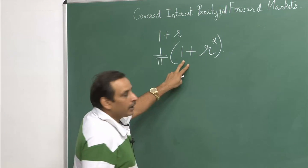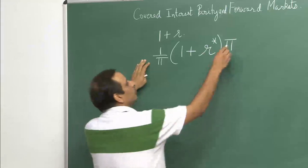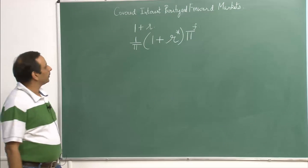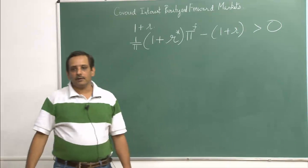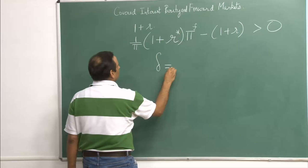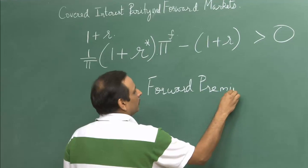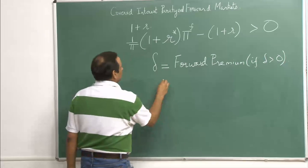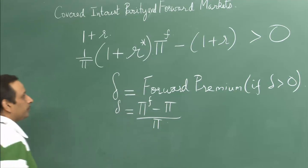Now, you want to bring it back. Instead of using the π^e that we used when discussing the open interest differential, we use the forward rate to convert the foreign currency into the local currency. If this is greater than 0, then it is worthwhile to invest in the foreign bonds. What you need to define is delta (δ), which is the forward premium if δ > 0, and this is equal to (π_f - π)/π.